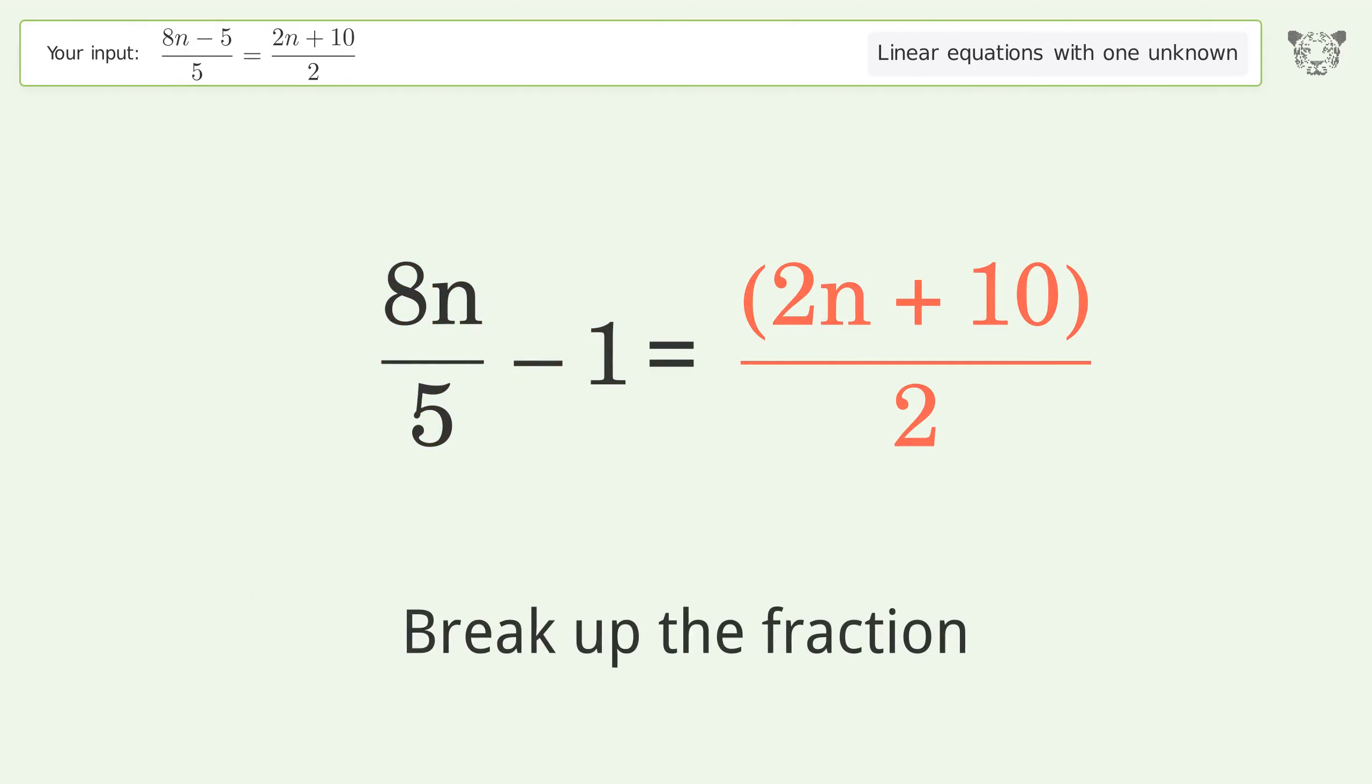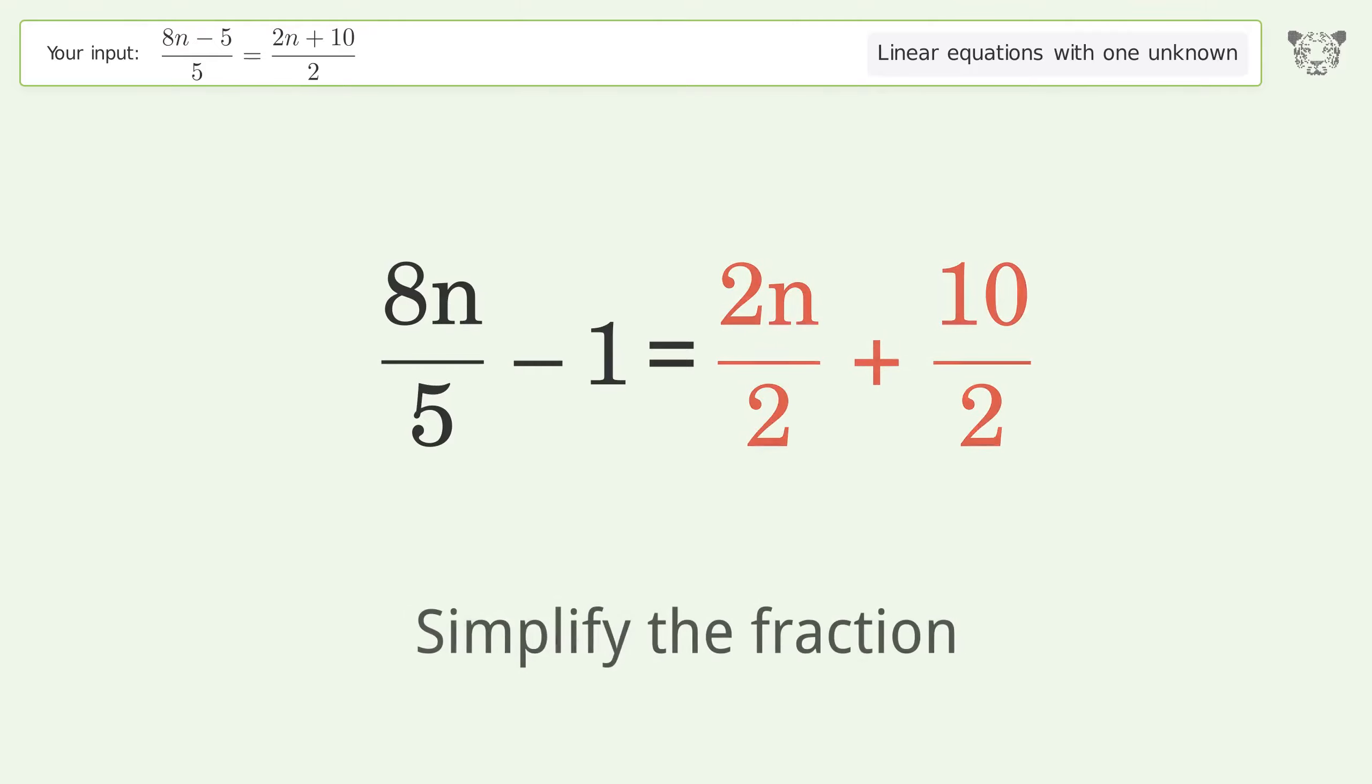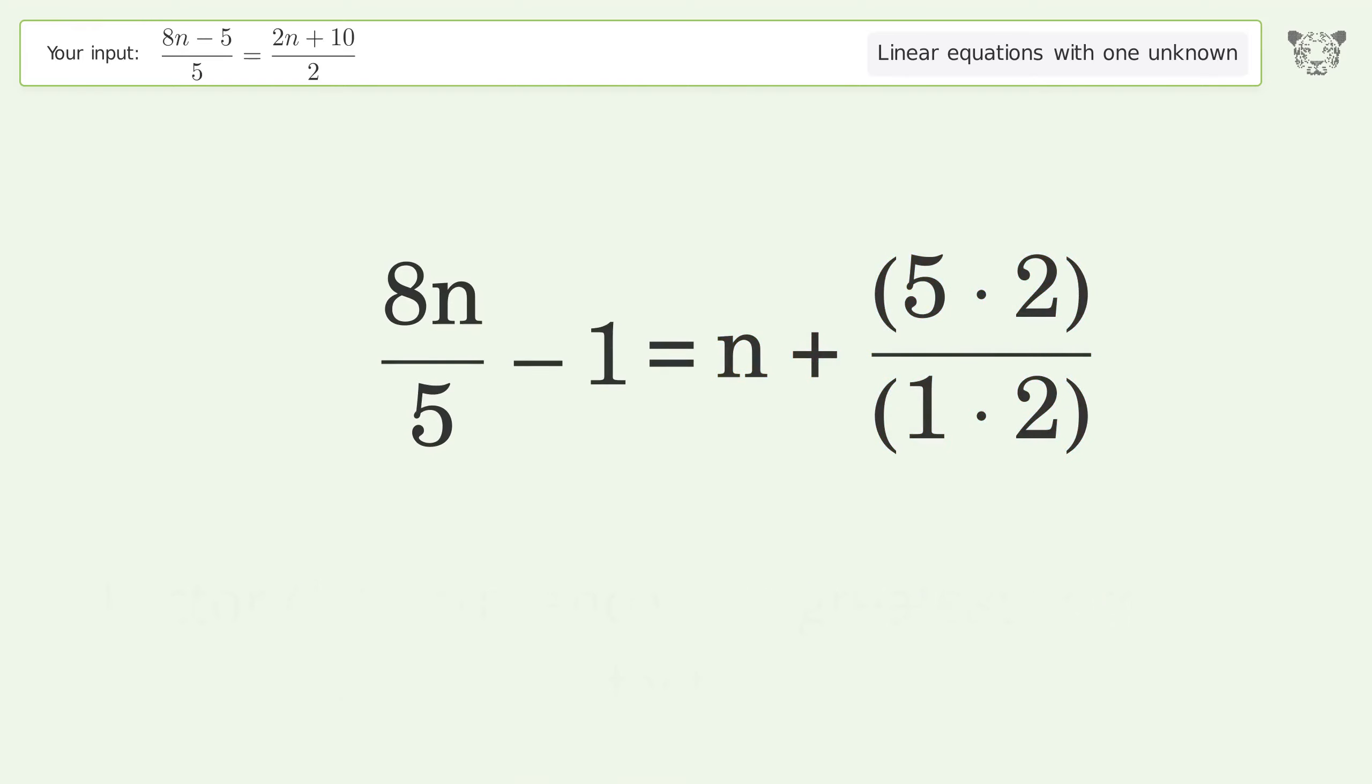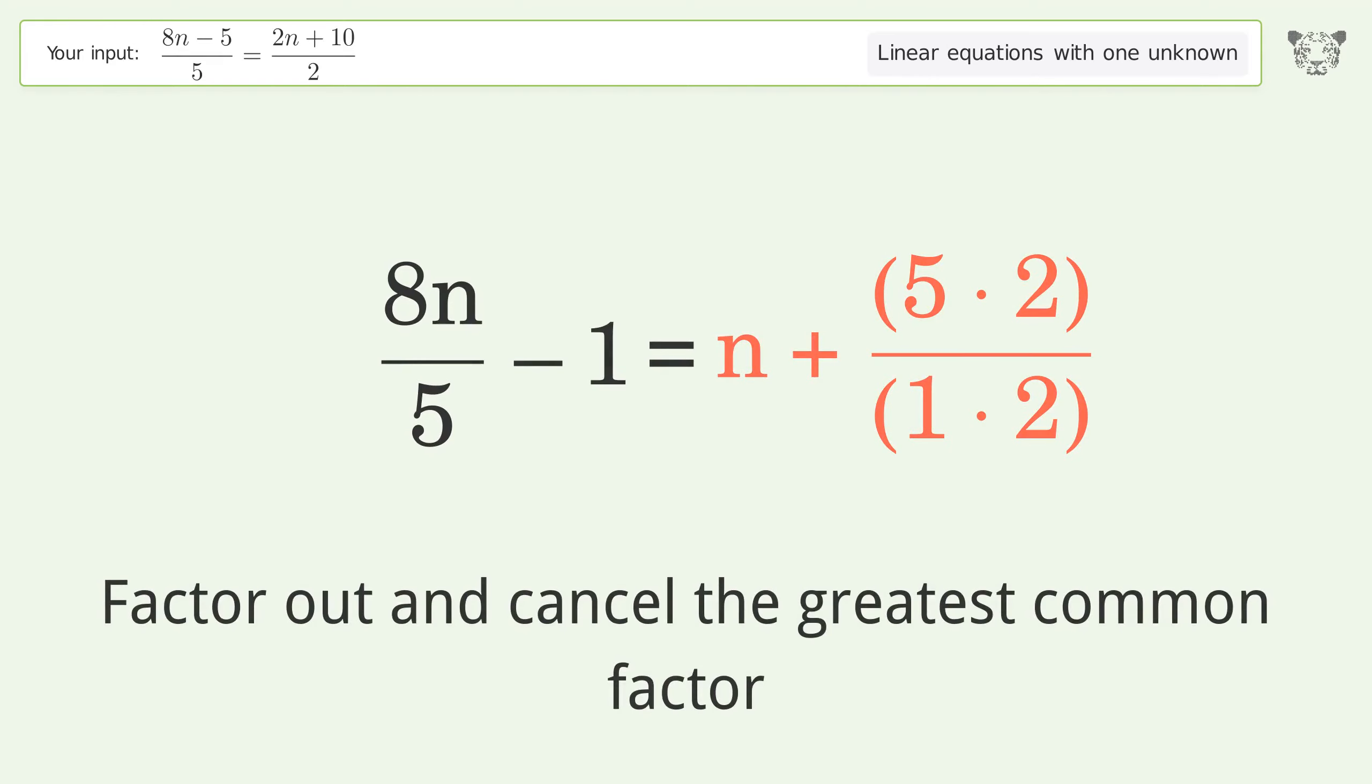Break up the fraction. Simplify the fraction. Find the greatest common factor of the numerator and denominator. Factor out and cancel the greatest common factor.